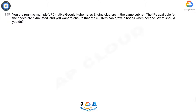Question 149: You are running multiple VPC-native Google Kubernetes Engine clusters in the same subnet. The IPs available for the nodes are exhausted and you want to ensure that the clusters can grow in nodes when needed. What should you do?